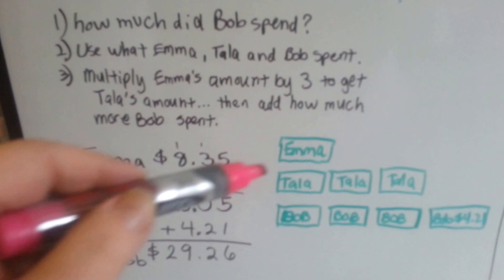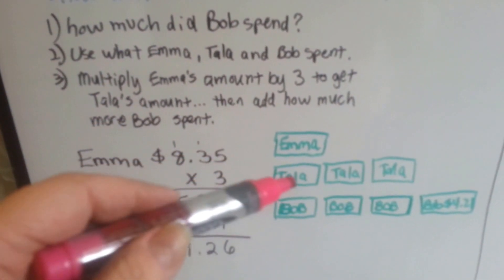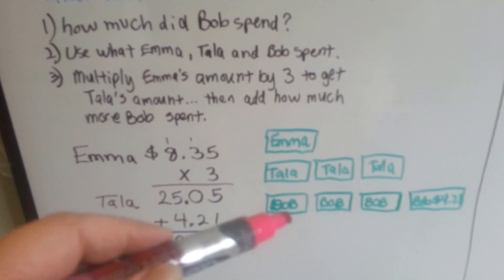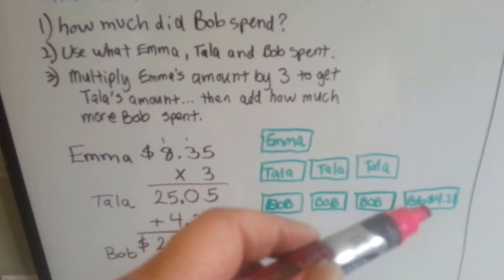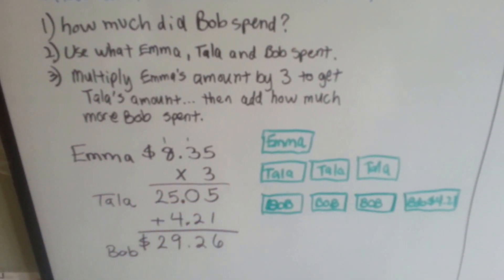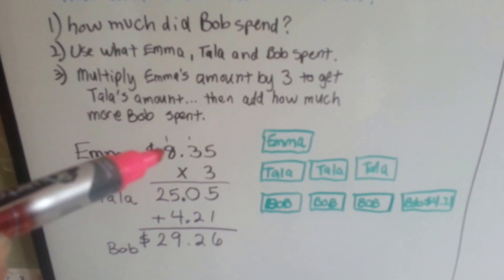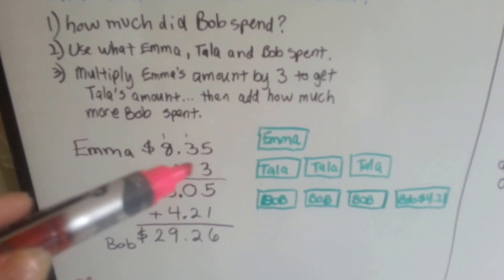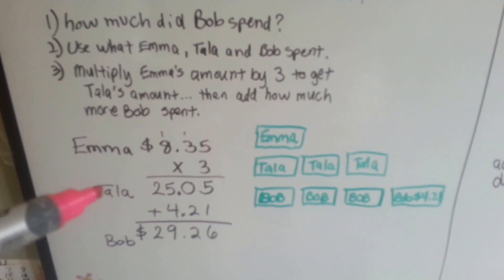So, here's Emma's amount. Tala is three times more. Bob is the same as Tala's amount except it's got $4.21 more. Emma spent $8.35. If we multiply it by three, we'll know what Tala spent.